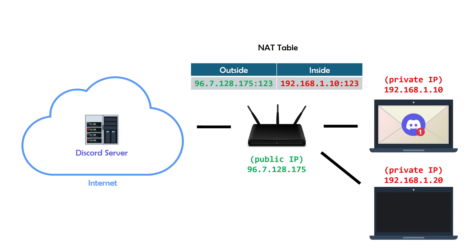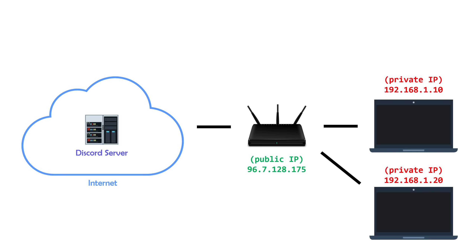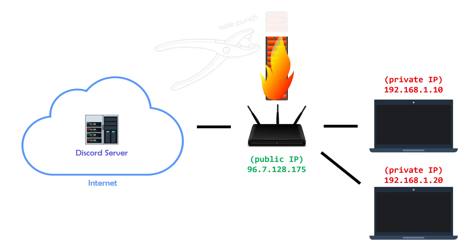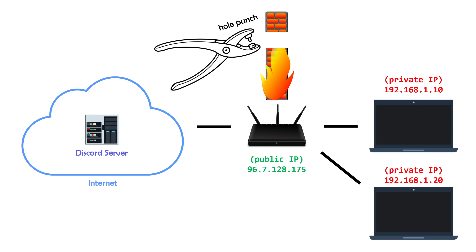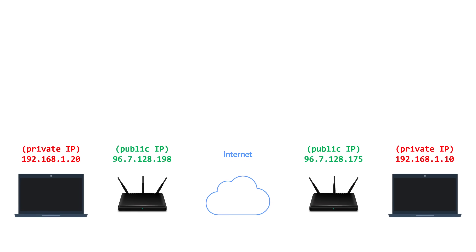This process — where all traffic needs to be initiated from within the network in order to open up a hole in the network's router, also known as a firewall — is referred to as hole punching, since we're essentially punching a hole to allow return traffic back into the network. Without first punching a hole, the firewall would deny all inbound traffic. Now that we've established how NATed networks operate, this brings us to the main topic of this video. For centralized services such as Discord, this system works well.